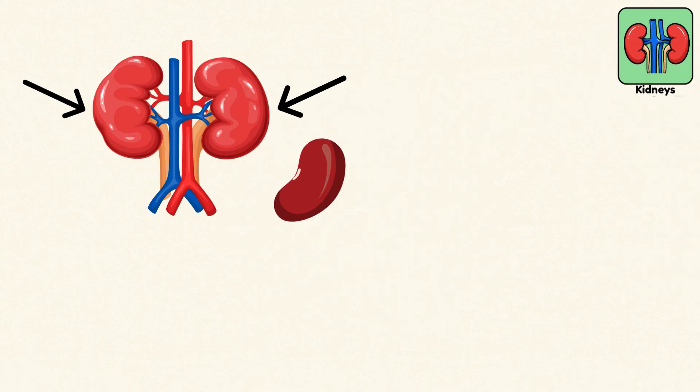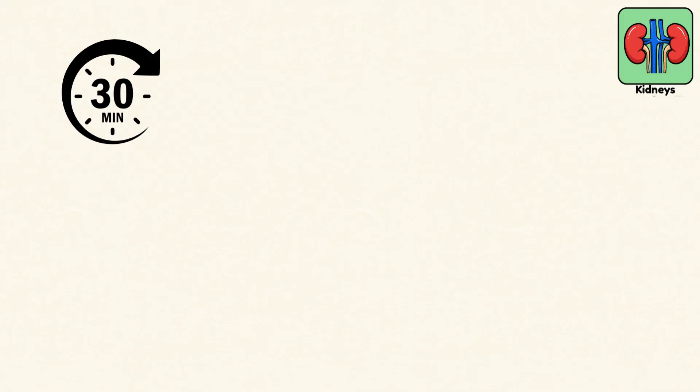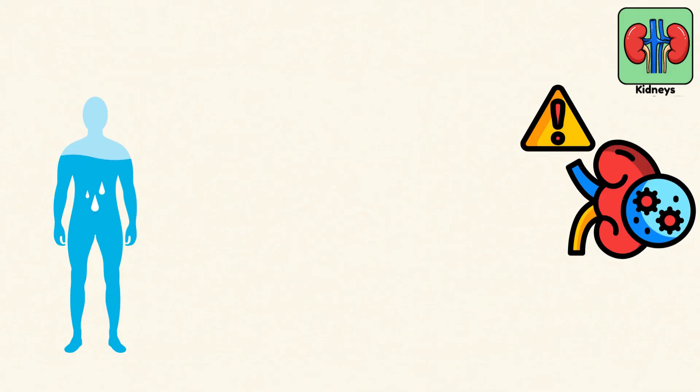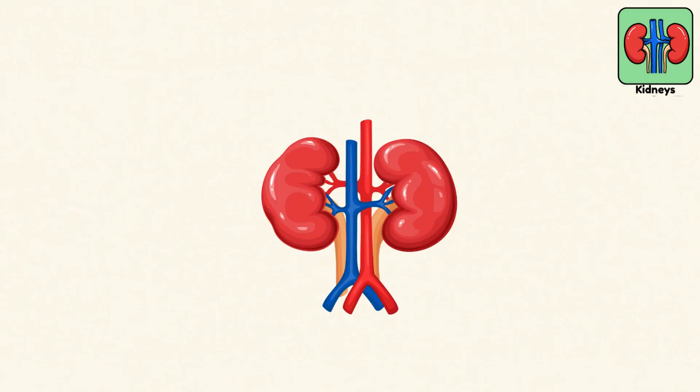Kidneys. Now meet your kidneys, two silent, bean-shaped filters just below your ribs. Every 30 minutes, they filter all the blood in your body, removing toxins, excess water, and waste products to form urine. Each kidney contains over a million tiny filters called nephrons.